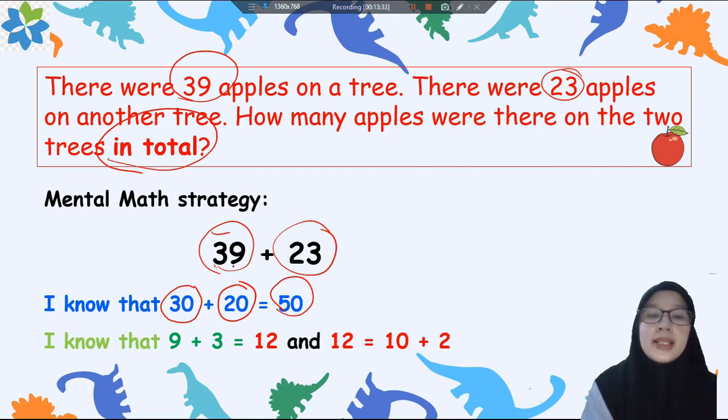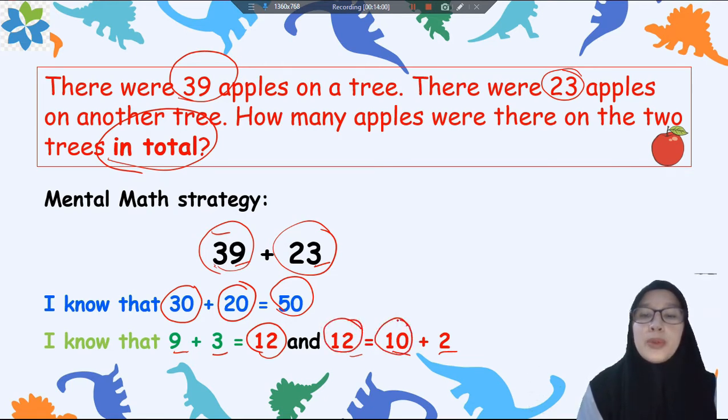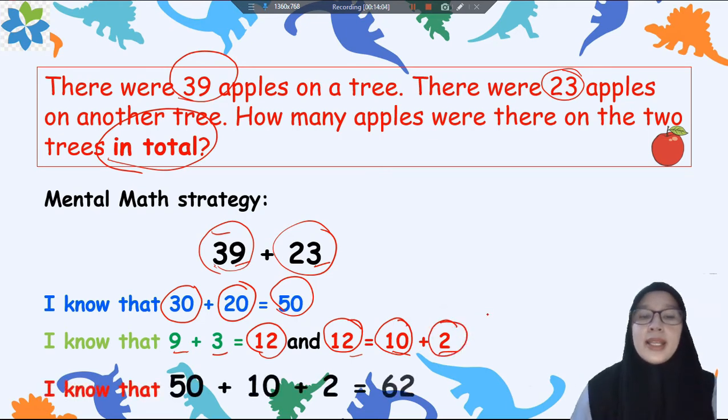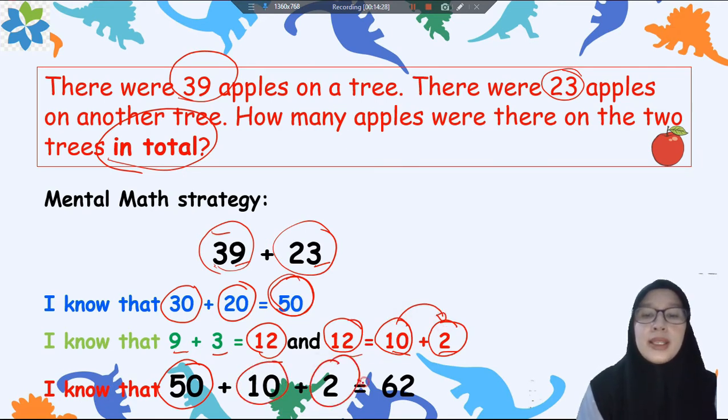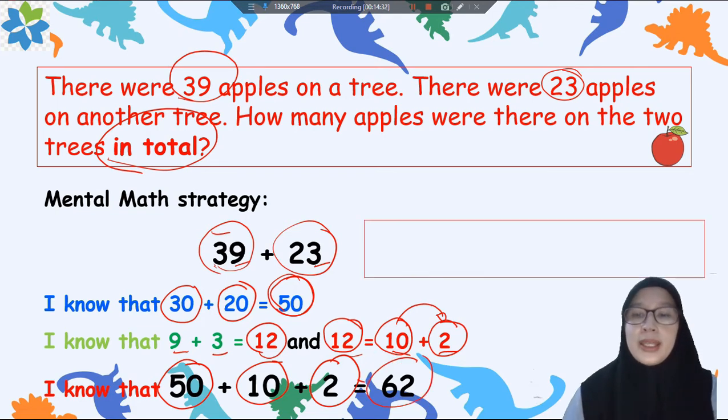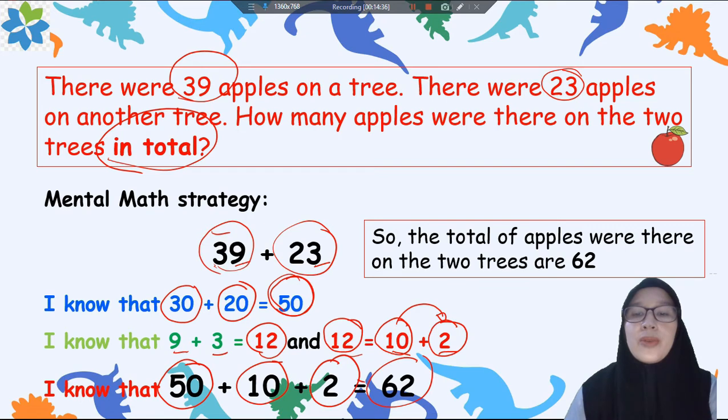And next please find out the ones. Satuannya adalah 9 dan 3. And please add together them, 9 ditambah 3 sama dengan 12. And we know that 12 equals 10 plus 2. Jadi dari satuannya kita jumlahkan dulu ada 9 ditambah 3 hasilnya 12. Kemudian ini bisa kita pisahkan menjadi puluhan dan satuan juga menjadi 10 ditambah 2. And next let's add both of the numbers. Jadi sekarang kita jumlahkan dari puluhan dan satuannya ada 50, and then 10 from this one, 10 plus 2 and the result is 62. So the conclusion is the total of apples were there on the 2 trees are 62.